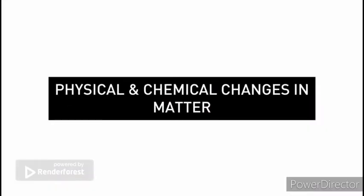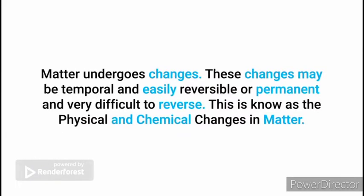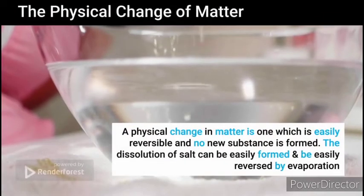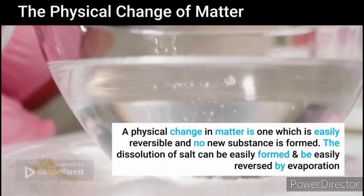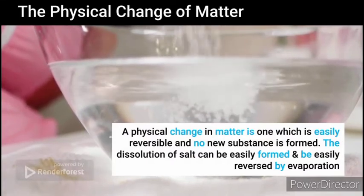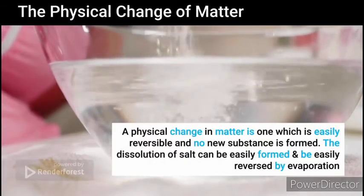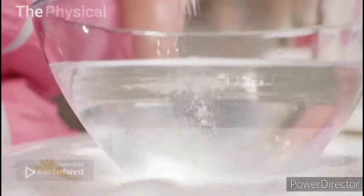Now let's talk about the physical and chemical changes in matter. Matter undergoes changes. These changes may be temporary or easily reversible, or permanent and very difficult to reverse. The physical change in matter is one which is easily reversible and no new substance is formed. For example, the dissolution of salt can be easily reversed by evaporation.